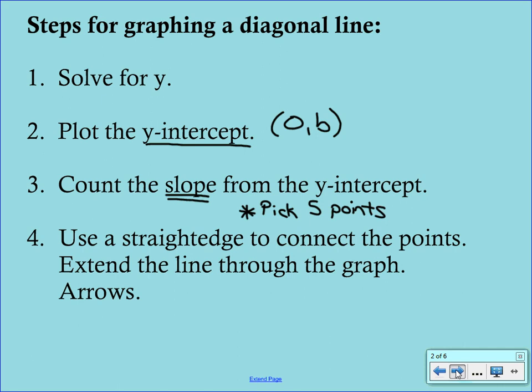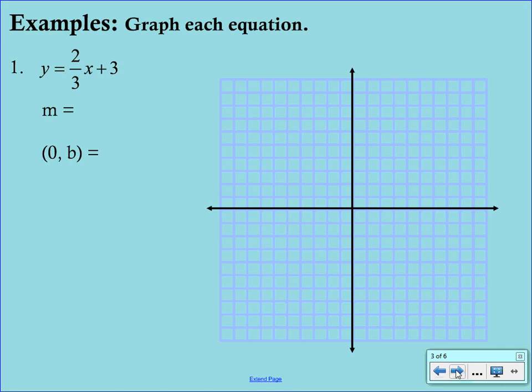So let's put this to work here. Our first example, you'll notice that your equation is given in the slope-intercept form. So right from this equation, we can read off the slope and we can read off the y-intercept. The slope is the number in front of the x, so our slope is two-thirds. The b comes from the number that's being added to the x at the end, so our y-intercept is 3, but we write that as an ordered pair (0, 3).